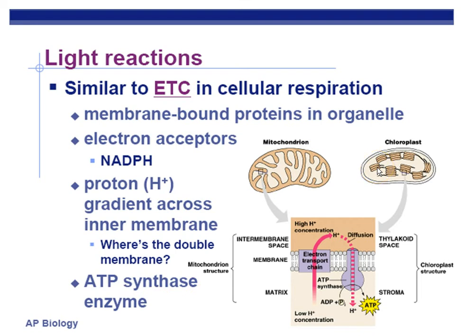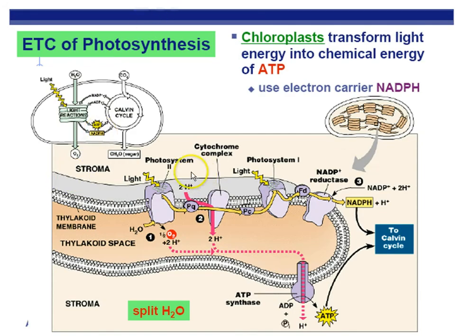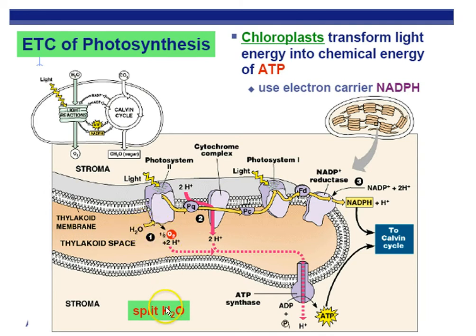Here we have the electron transport chain with photosystem 2 and photosystem 1 in the thylakoid membrane. The stroma is outside the thylakoid. The first step is to bust apart water — photolysis — breaking it into oxygen, protons, and electrons. The electrons from water are really important for these photosystems. Water provides electrons for the photosystems.